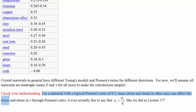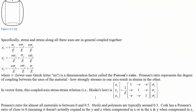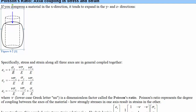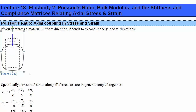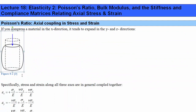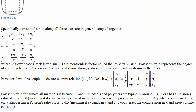Check your understanding: For a material with a typical Poisson's ratio of about 0.3, is it ever actually fair to say that epsilon x equals sigma x over E, like we did in lecture 17? Cork, with a Poisson ratio of 0, clearly satisfies this. For a non-zero Poisson ratio, you don't need nu to be 0 — you just need a boundary condition where the stress is forced to be 0 in the other dimensions, which is the case if the beam is unconstrained.